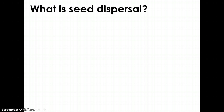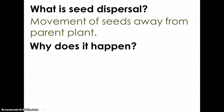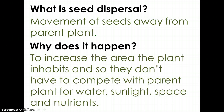The first question is: what is seed dispersal? Seed dispersal is the movement of seeds away from the parent plant. As humans we might wonder why would a seed — basically a baby plant — want to move away from the parent. Well, there's a really good reason: it's to increase the area that the plant inhabits and to make sure the baby plant does not have to compete with the parent plant for resources such as water, sunlight, space, and nutrients.